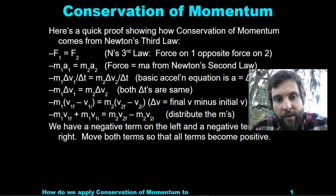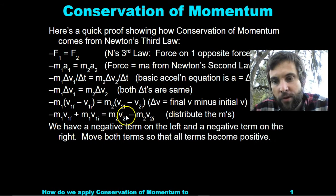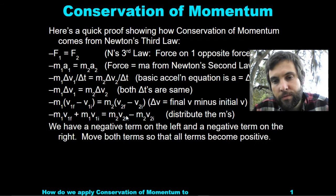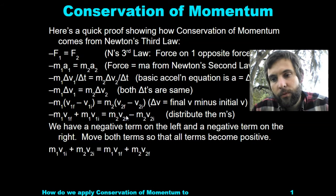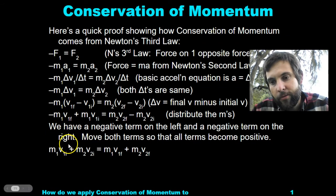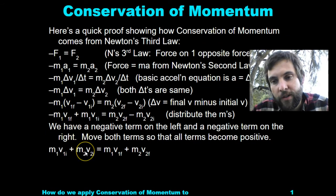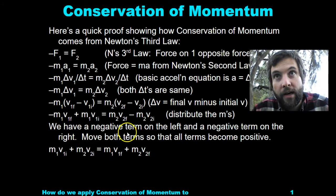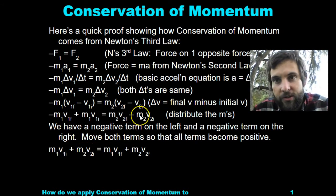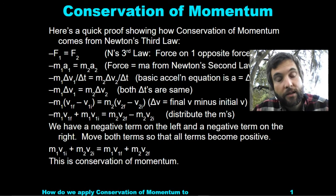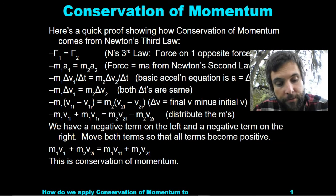We have a negative term on the left and a negative term on the right. Move both negative terms so that all terms become positive, and we get M1V1I plus M2V2I equals M1V1F plus M2V2F. And this is conservation of momentum.